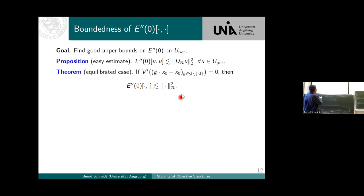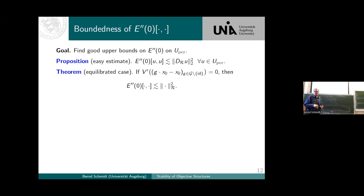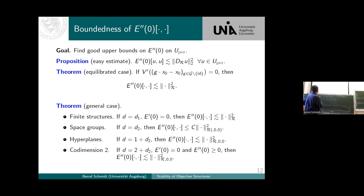In fact, I can put here the upper bound exactly the small semi-norm that we defined before — but only in a very special situation: the equilibrated case. Assume you're at an energy equilibrium where even each on-site potential is individually in equilibrium. This never happens, for example, for the Lennard-Jones potential, but if you had an atomistic chain with only nearest-neighbor interactions, this would be true. In such a case, we do have a very strong bound like this.